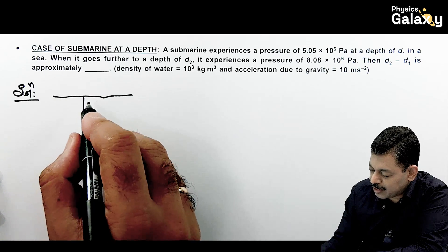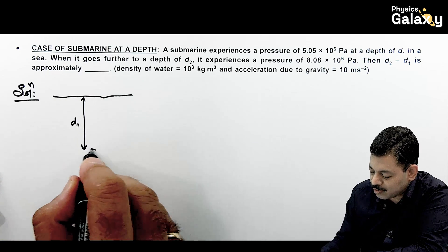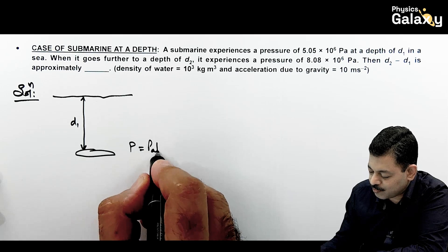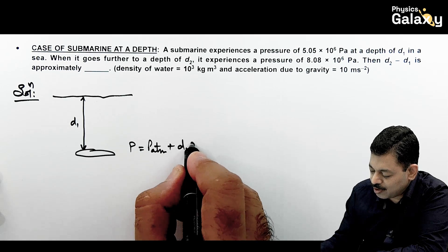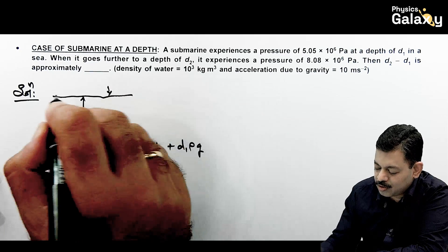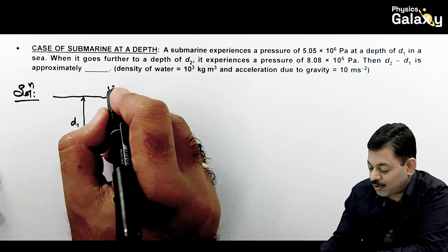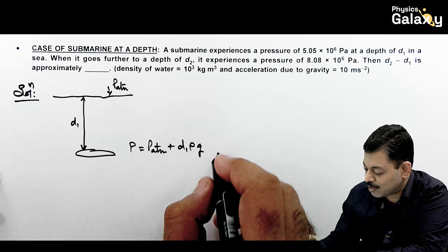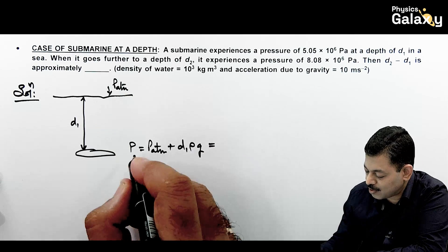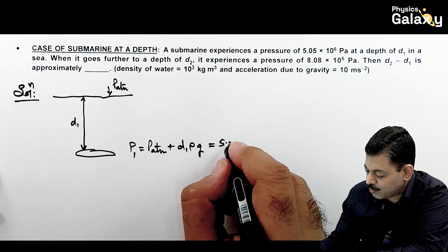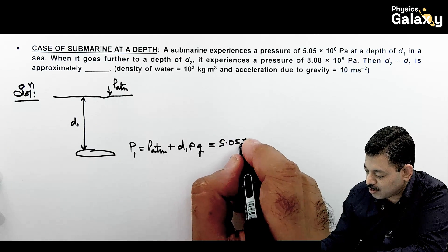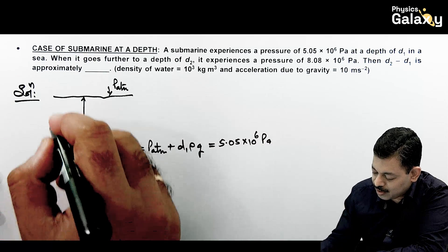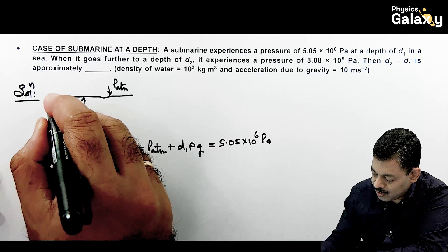At depth d1, the submarine is at a point where pressure is written as P_atmospheric plus d1·ρg, because at the topmost sea level there is atmospheric pressure, and at depth d1 it is P_atm plus h·ρg. This is given as P1 = 5.05 × 10⁶ Pascal.